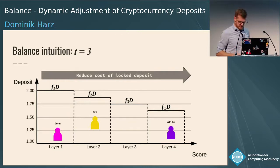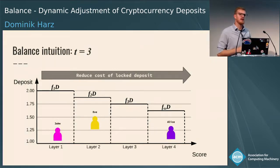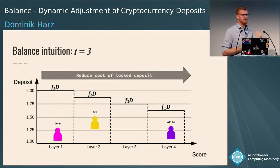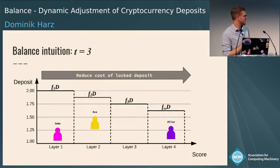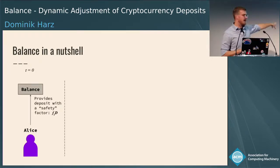If John performs an undesired action, he is thrown back to layer one and must increase his deposit again. Eve does well and Alice does exceptionally well — she reaches the highest layer, layer four, where she has the lowest deposit rate.